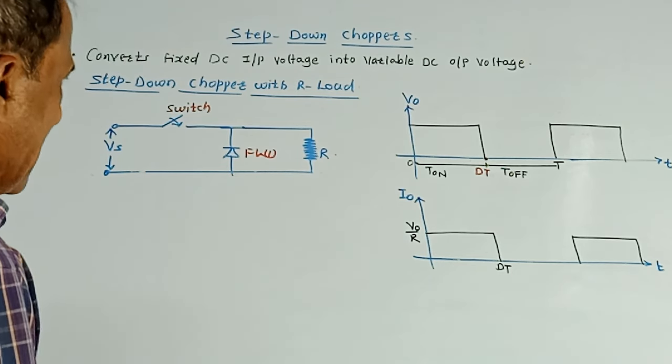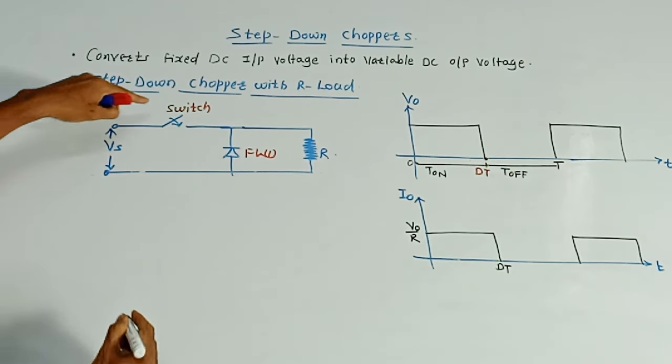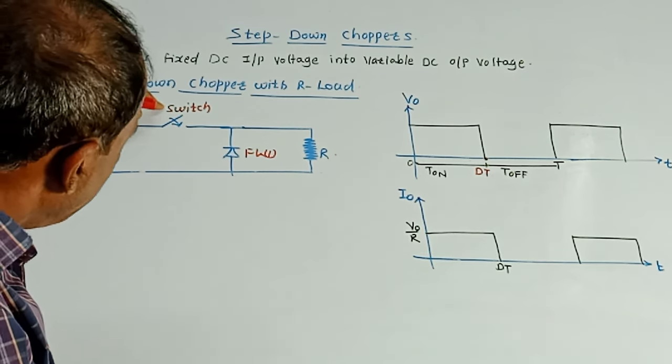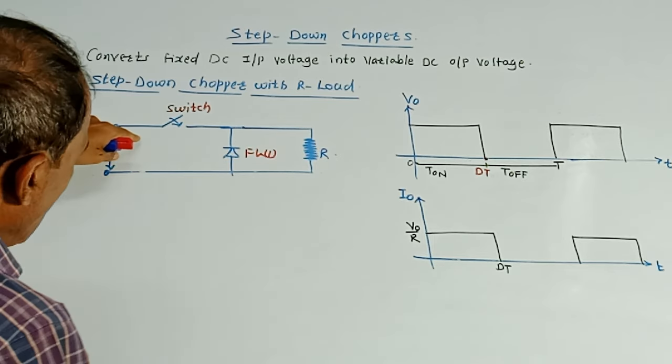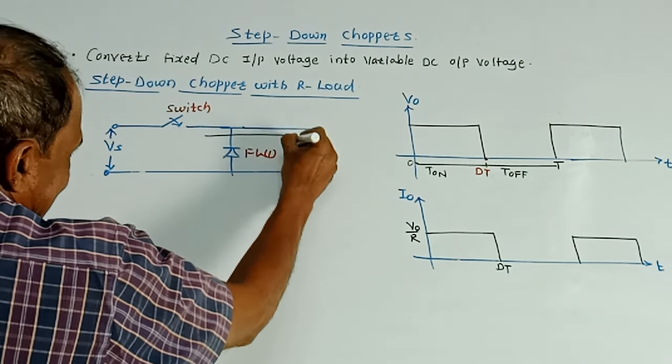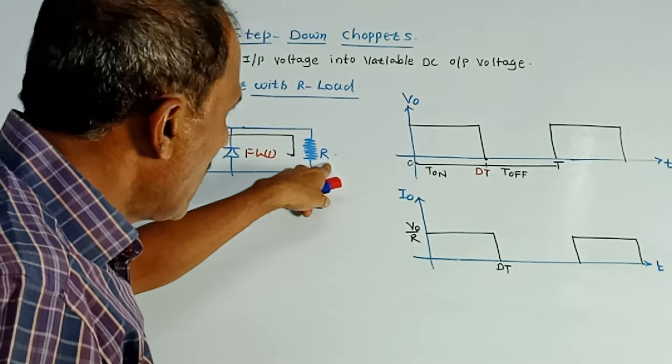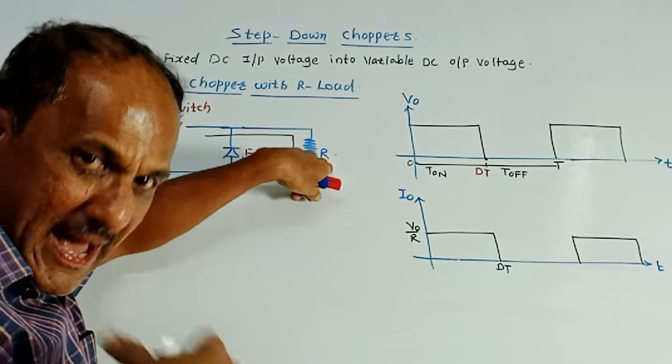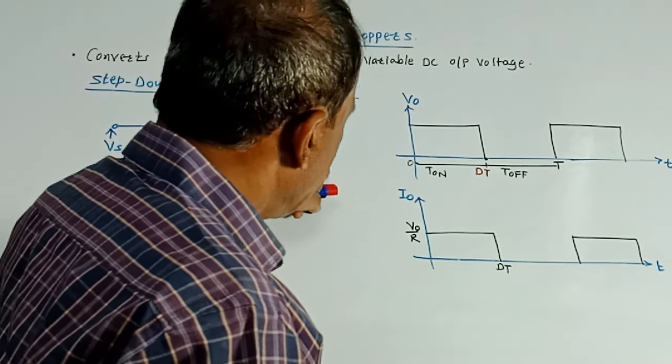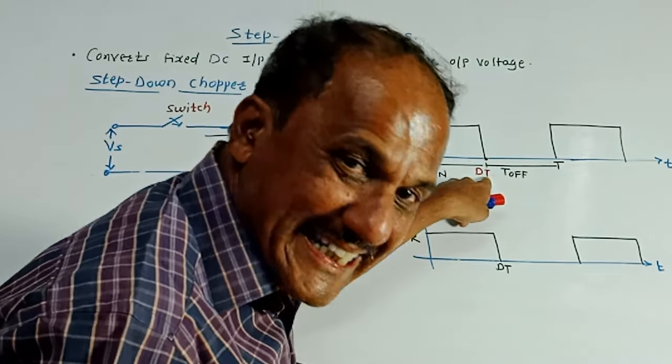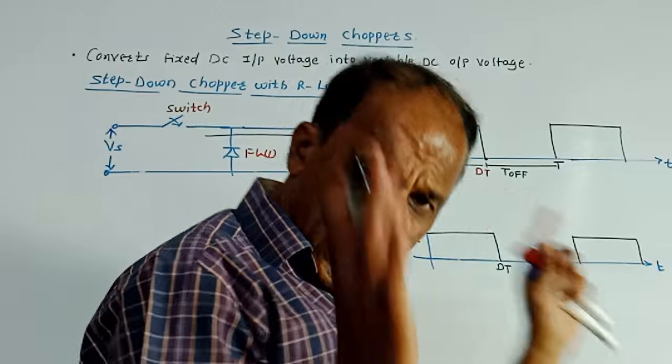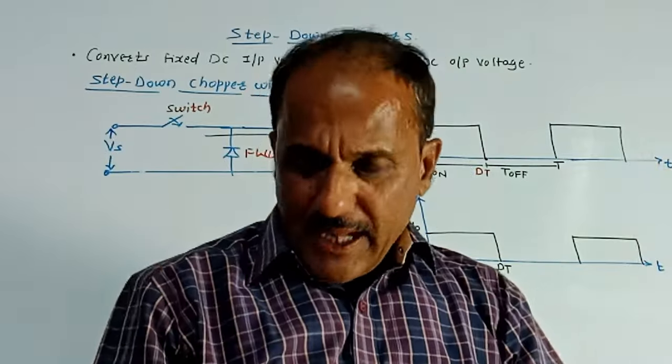Now the operation is pretty simple. Suppose we will switch on this particular device. That means suppose we are using one transistor and it is switched on. That means let us assume that the switch is closed. Whenever the switch is closed, whatever DC voltage that is Vs is there, that will be directly applied at the output. So this DC voltage will be available at the output, across this resistance. So this is the on time. From 0 to the value DT represents on time.